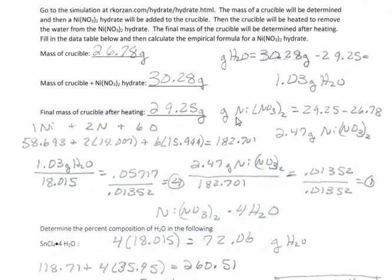What's left over is our nickel nitrate — the hydrate without water. To calculate that, take the final mass and subtract the mass of just the crucible: 29.25 − 26.78 = 2.47 grams of nickel nitrate. That's the compound without water, and it's what remains in the crucible and does not evaporate.